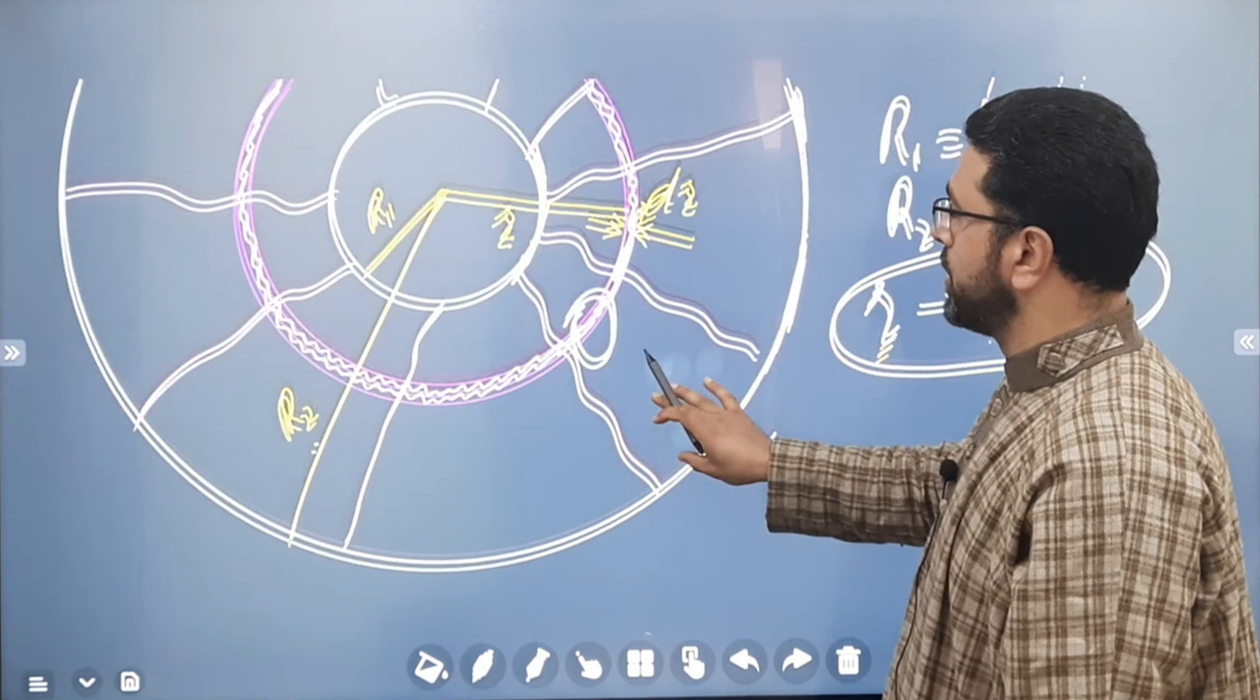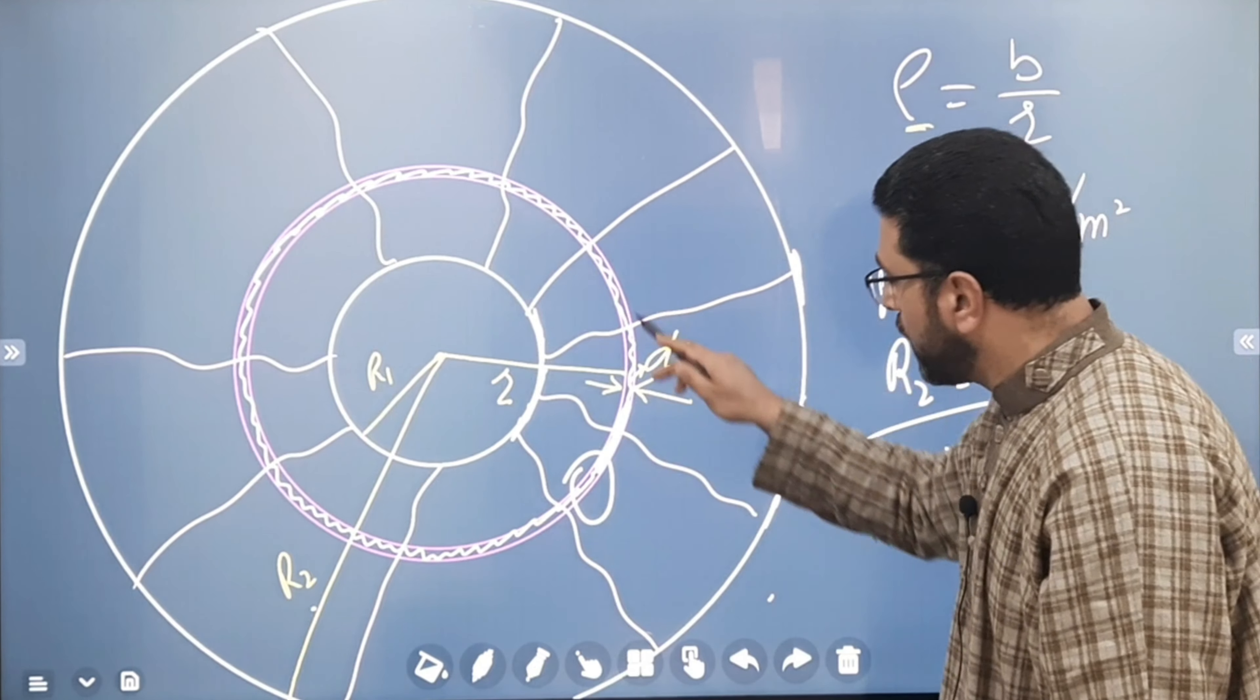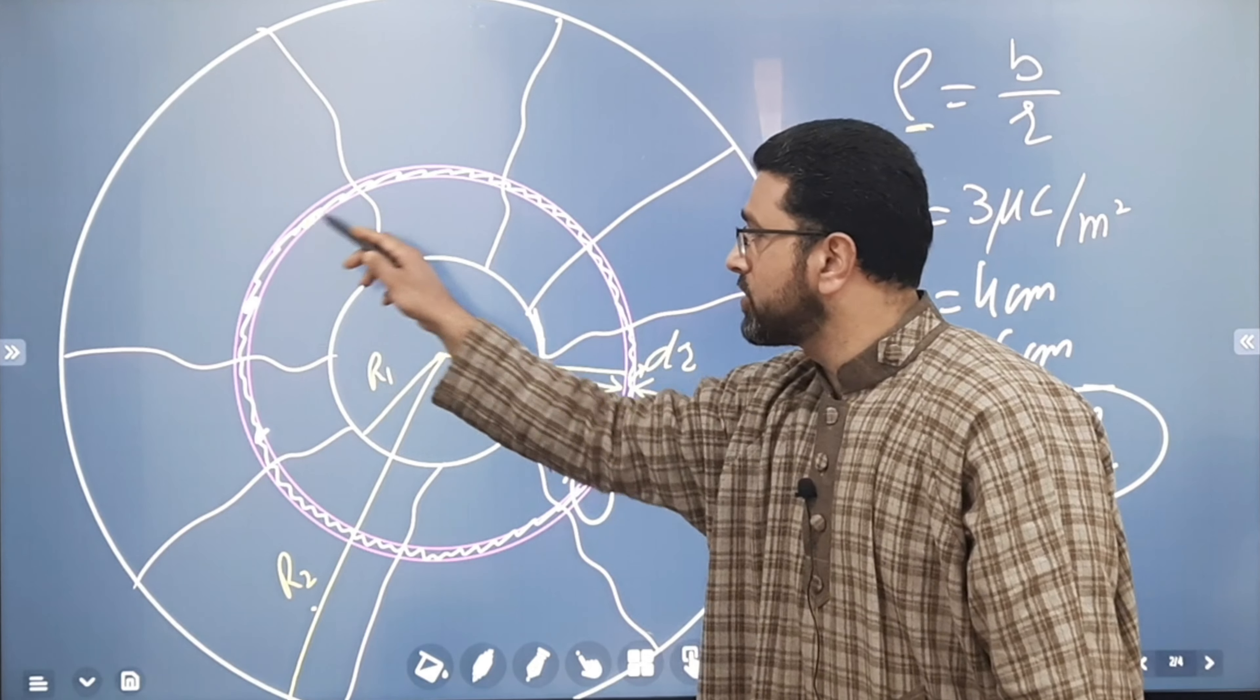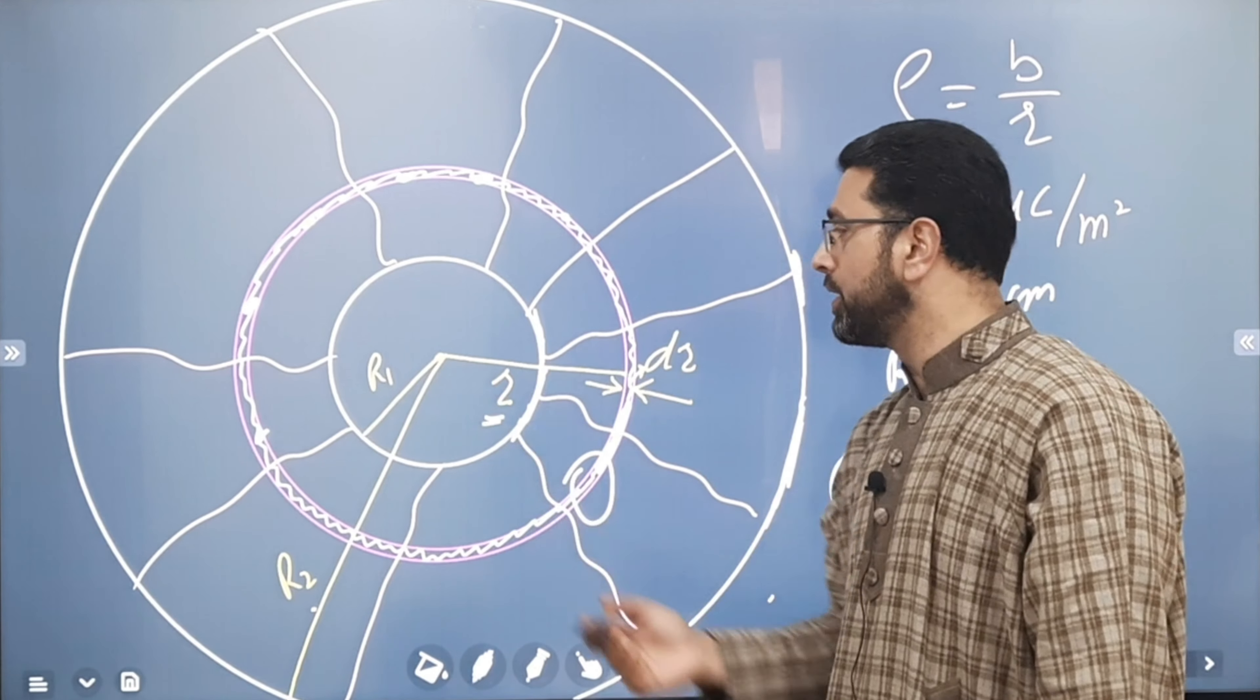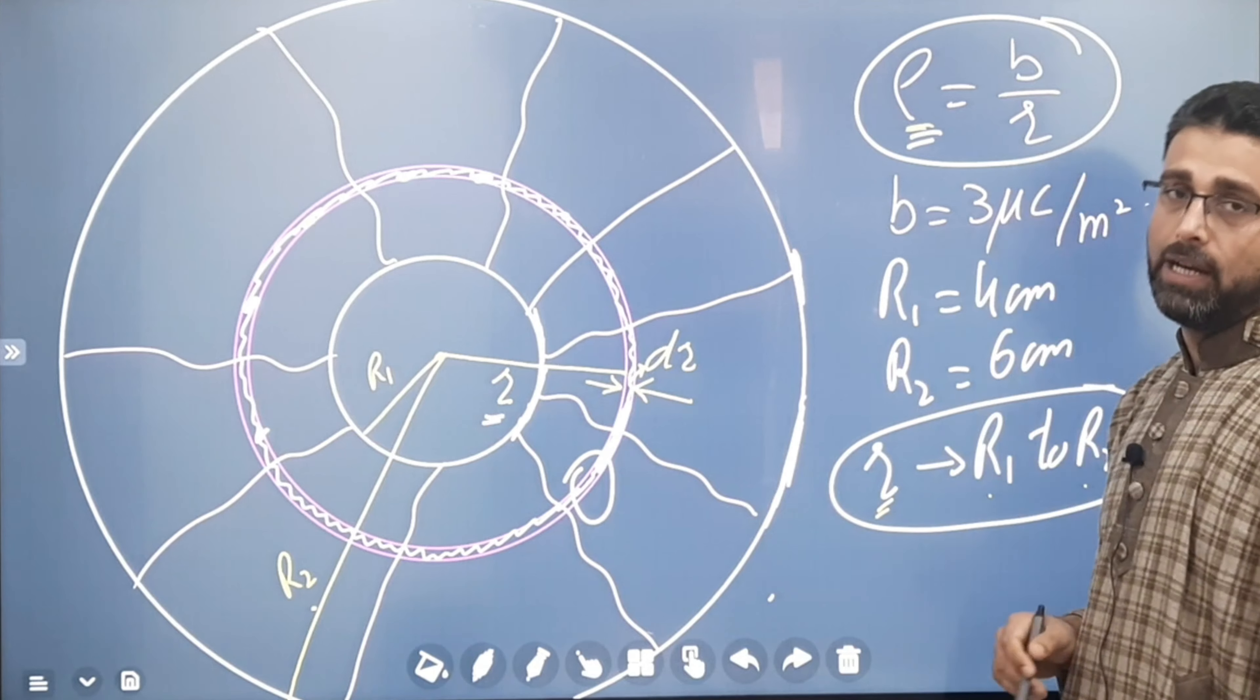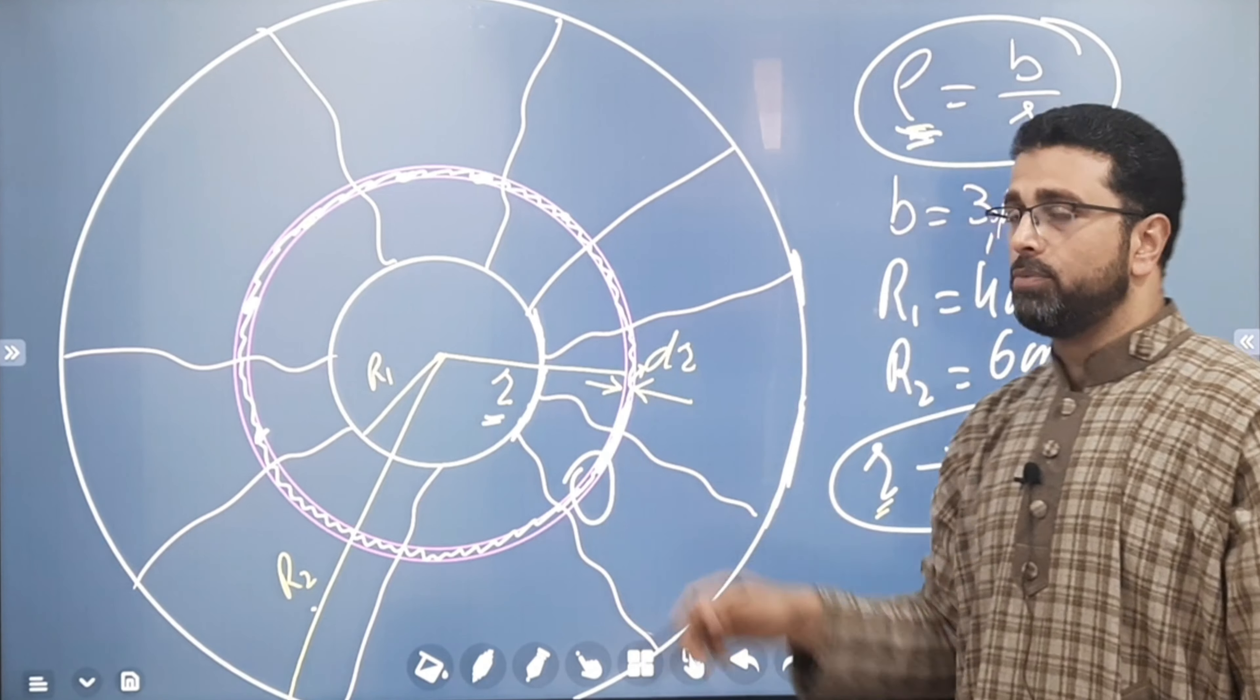Now, with this shell here, spherical shell, with distance R from the center, density of this particular shell, every point of it is at the same distance from the center. Every point at a distance of R. Because it is centered at this point. So, density at every point will be same. B divided by R.